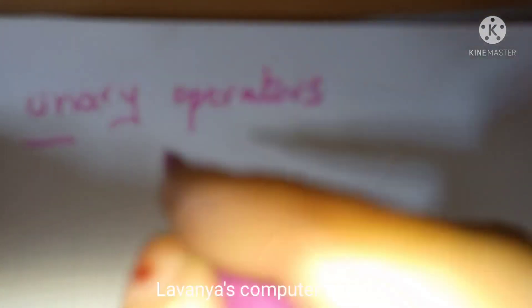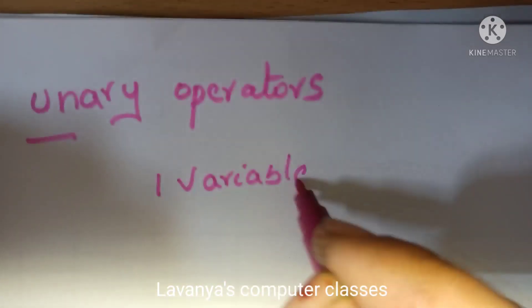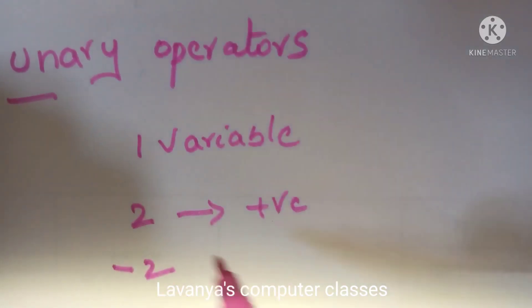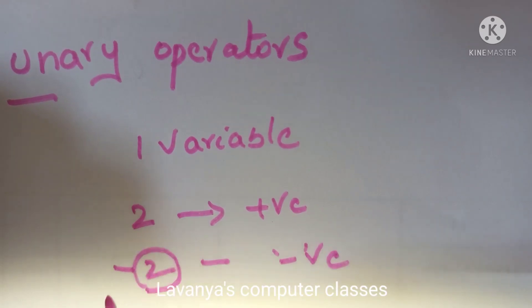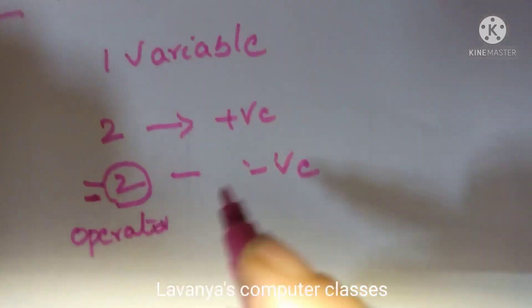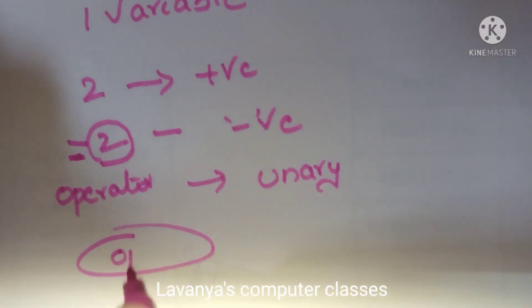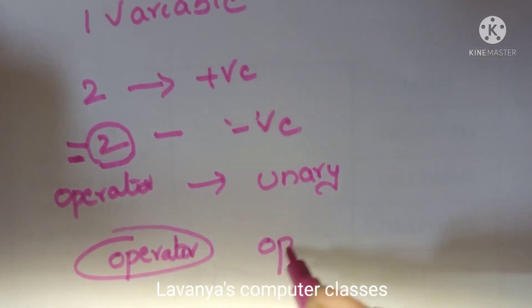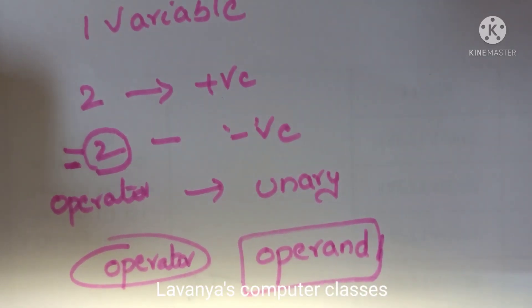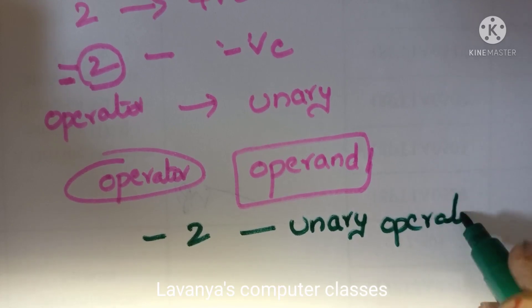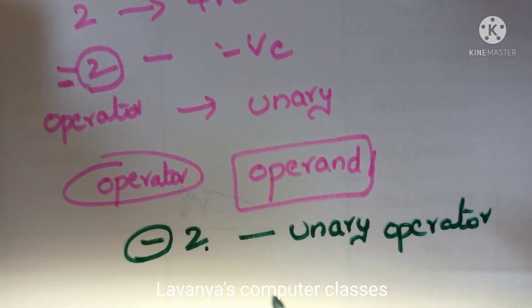Now, a clear explanation with an example of unary operator. Unary means one — any operator working with only one single variable is called a unary operator. For example, 2 is normally a positive number, but minus 2 is a negative number. The minus symbol placed before 2 is the operator, and 2 is the single operand. That is an example of a unary operator.